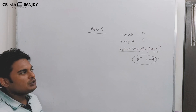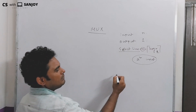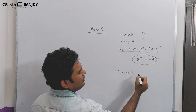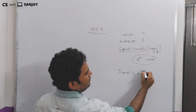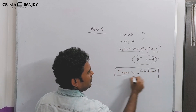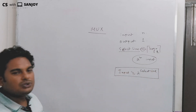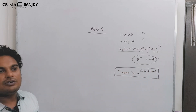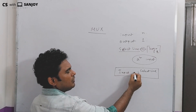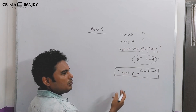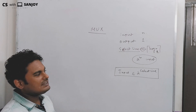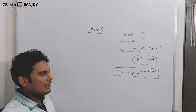We have 2 to the power of select lines. The relationship is: input must be less than or equal to 2 to the power of the number of select lines. So input ≤ 2^(select line).